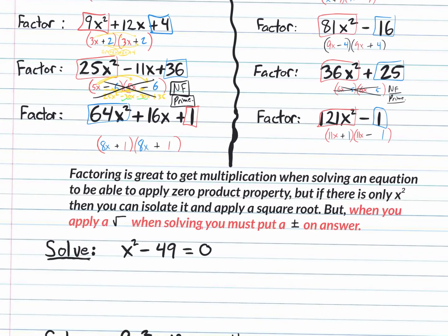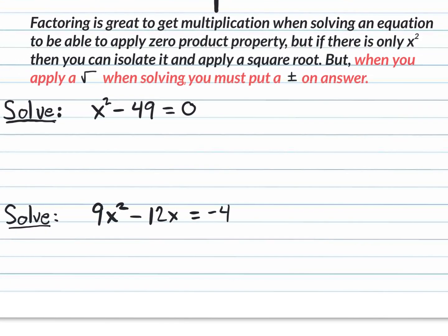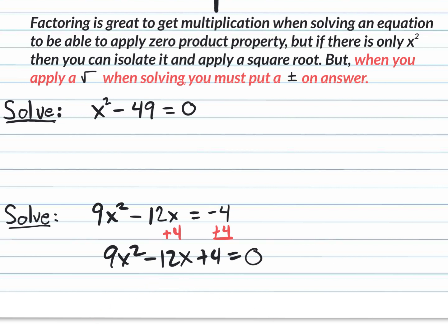Why do we even factor? Factoring is great to get a product when you're solving an equation, so you can apply the Zero Product Property. For the equation 9x squared minus 12x equals negative 4, move everything to one side by adding 4: 9x squared minus 12x plus 4 equals 0. Recognize the perfect square terms in the front and back, square root them: square root of 9x squared is 3x, square root of 4 is 2. Both signs are negative since the middle term is negative: (3x minus 2)(3x minus 2) equals 0.